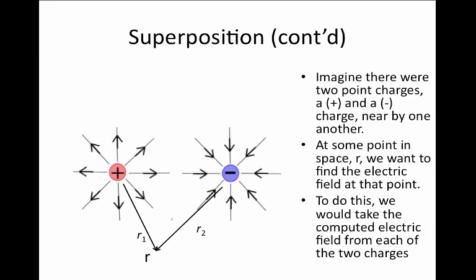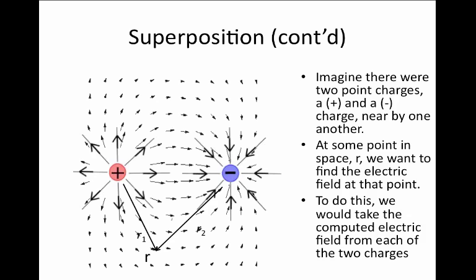The arrow coming from the positive charge points down and to the right. The arrow coming from the negative charge actually points up and to the right, because the electric field is trying to draw an imaginary positive charge up toward the negative charge. So we have a down-and-to-the-right arrow adding to an up-and-to-the-right arrow. The up and down components slightly cancel, and the net arrow at that location points over to the right.